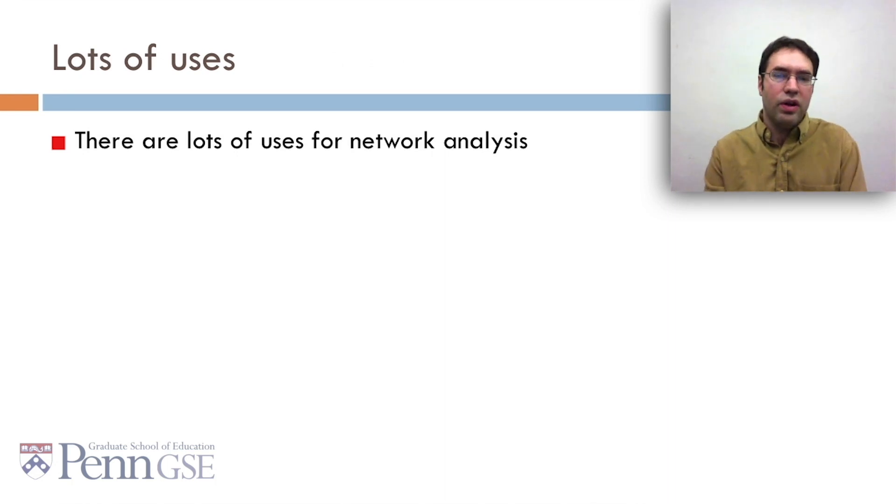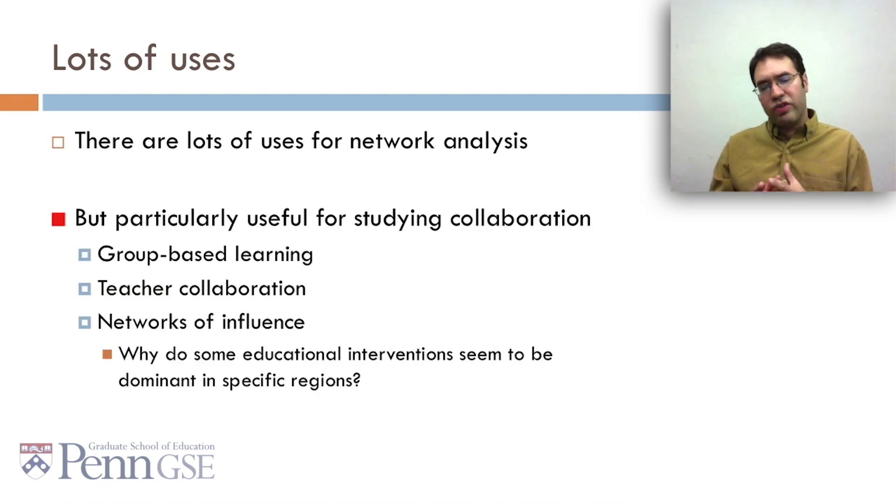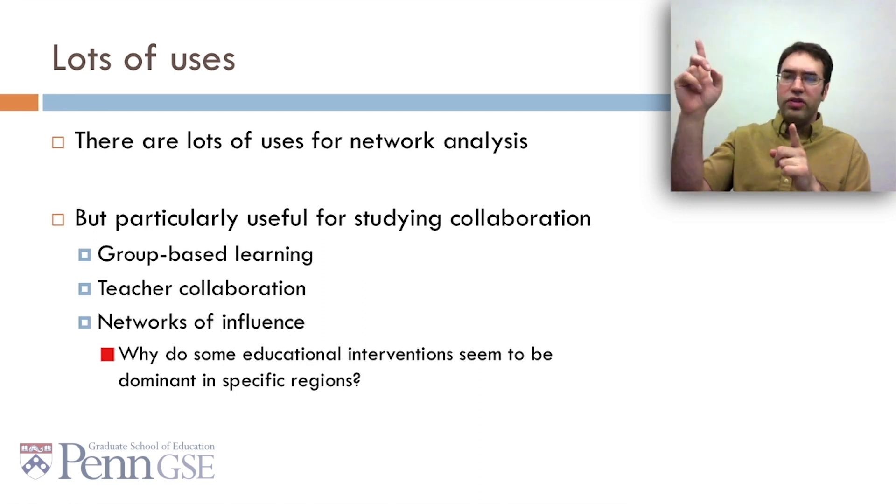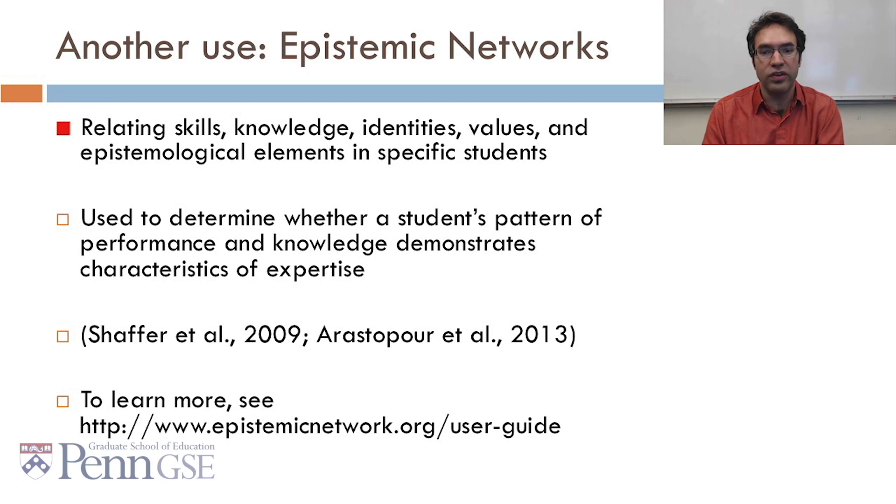So network analysis. There are lots of uses for network analysis. Lots of methods. It's particularly useful for studying collaboration. Group-based learning. Collaboration among teachers. Networks of influence. One question of particular interest to me is, why do some educational interventions seem to be dominant in specific regions? Why is assessment based in the Northeast, and Reasoning Mind is based in Texas? Another use of network analysis is in epistemic networks, which relate skills, knowledge, identities, values, and epistemological elements in specific students. They're used to determine whether a student's pattern of performance and knowledge demonstrates characteristics of expertise by comparing the graph of a novice student to an expert student. And to learn more, see the link here.